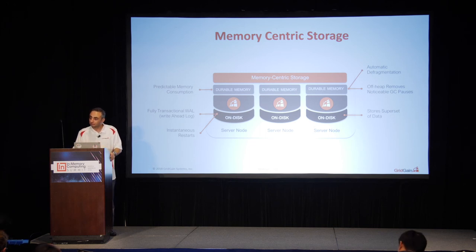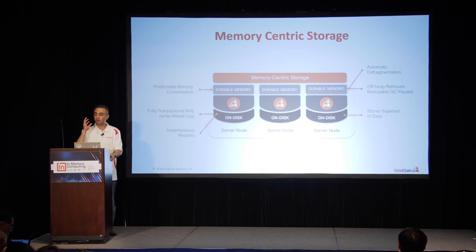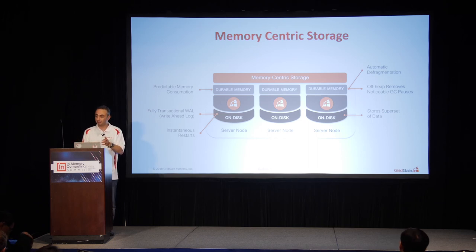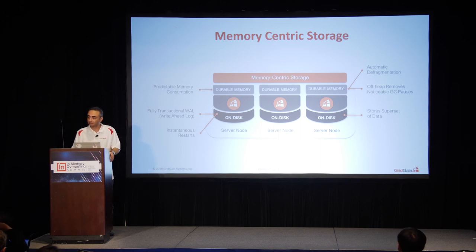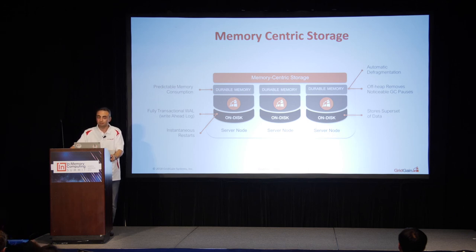Question about primary and backup copies in Ignite: in Ignite, for every key there is one owner — the primary node — and then one or more backup nodes, with the number of backups being a configurable parameter. Whenever a primary copy is updated, we have several modes to update backups: synchronously, where the transaction commits only when all copies are updated, or asynchronously, where backups are updated later, depending on the consistency you need.